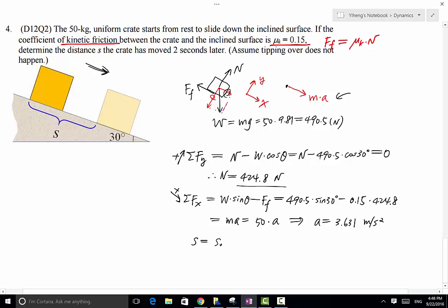S equals S0 plus V0t plus one-half at squared. S0 is 0, the initial position can be assumed to be 0, and initial velocity is 0. So this is simply equals to one-half times constant acceleration, 3.631, times t is 2 seconds squared. And this equals to 7.26 meter. That is the answer to this problem.